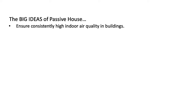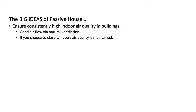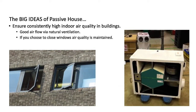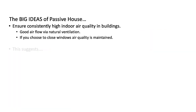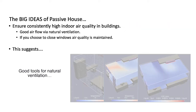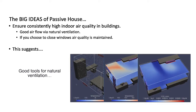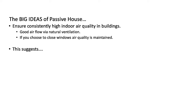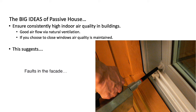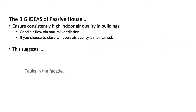First, let's ensure consistently high indoor air quality in buildings. That means good airflow by way of natural ventilation, and if we choose to close the windows, air quality is still maintained. This suggests that design teams need good tools for designing natural ventilation into their buildings — this is beyond the scope of the passive house planning package. It also suggests we need to pay very close attention to faults within the facade which might influence infiltration. We want to be in control of air movement.